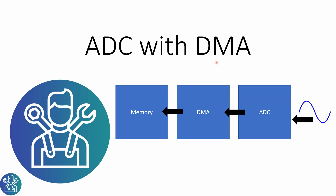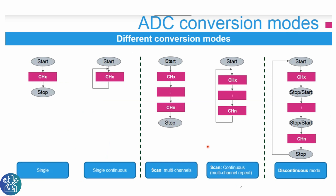DMA is Direct Memory Access and on STM32, to keep it in simple terms, it's an automated system that takes any information that comes from the ADC and puts it in the memory without user intervention. There are different ways to do the ADC conversions — I covered them in the ADC Interrupt video — and in today's video I'll show how to do single continuous conversion with the DMA.